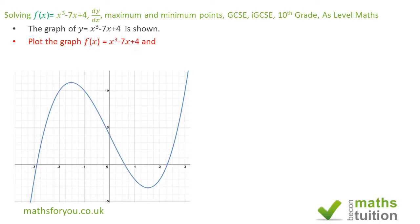Okay now moving on it says use the graph to solve the equation x³ minus 7x plus 4. This is the GCSE version. Now for IGCSE or AS-level maths it might say something like solve f(x) equal to 0. So in other words you want to find where this graph crosses the x-axis or the line y is equal to 0.